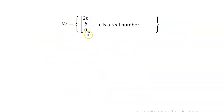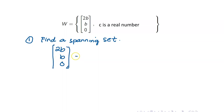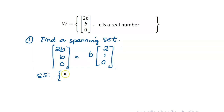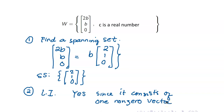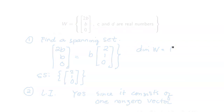Next, we have this set. First step: find a spanning set. Since an arbitrary element is (2b, b, 0), this is just a scalar multiple of (2, 1, 0). So a spanning set would be {(2, 1, 0)}. Is this linearly independent? Since we only have one vector, as long as it is not the zero vector, it is linearly independent. Yes, it is linearly independent because it consists of one non-zero vector. Therefore, this set is a basis, and hence the dimension of W is equal to 1.